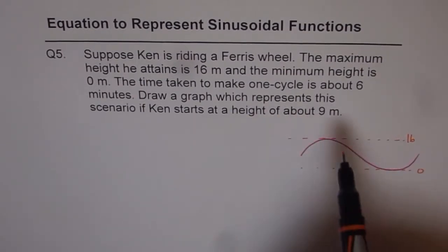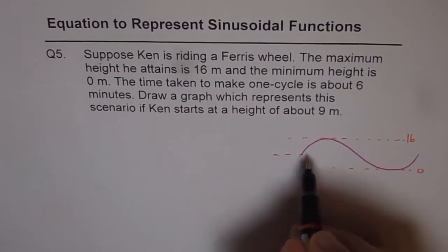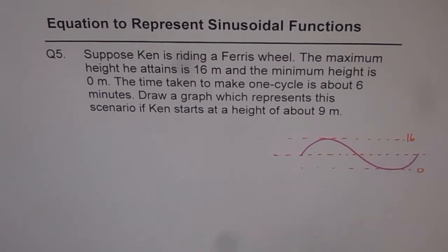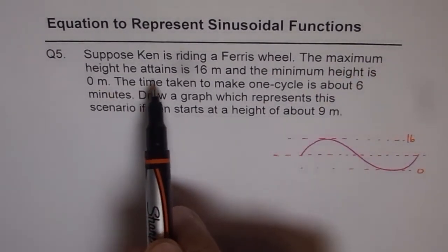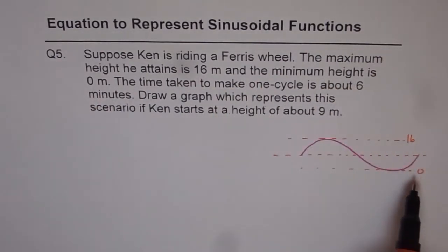Now let me draw a line right in the center also which is kind of like this. So that's the sinusoidal function representing the situation. Now it says that the maximum height he attains is 16 meters. That's correct. Minimum height is 0 meters.